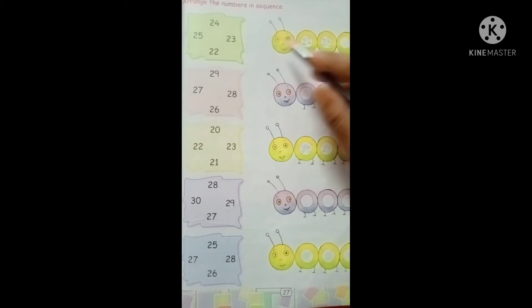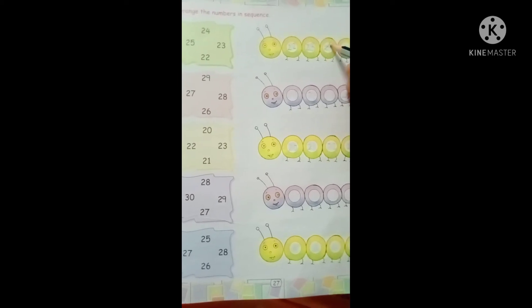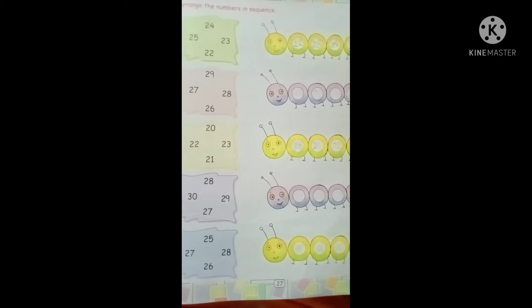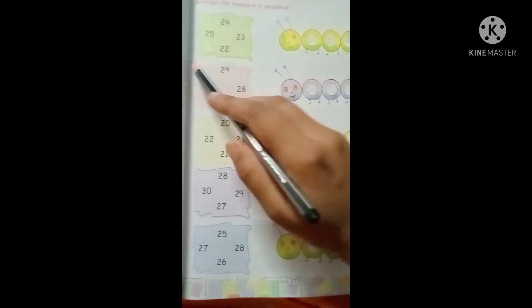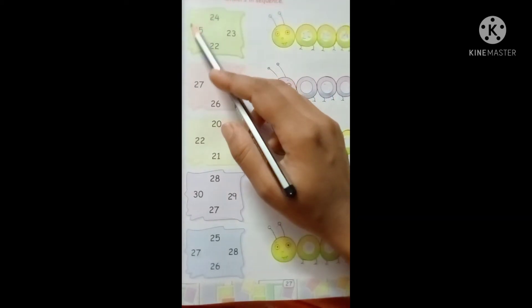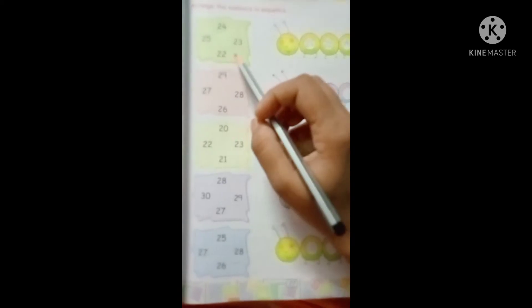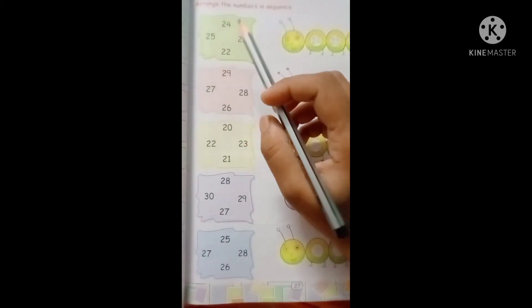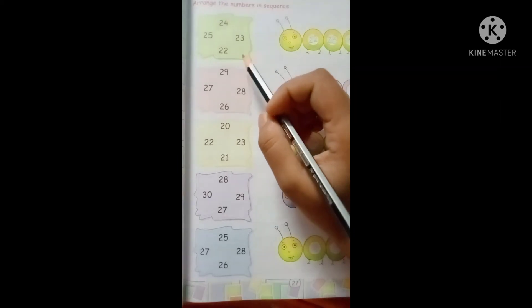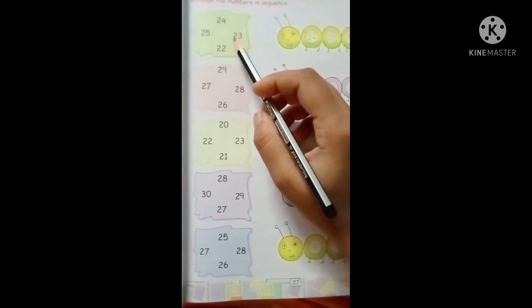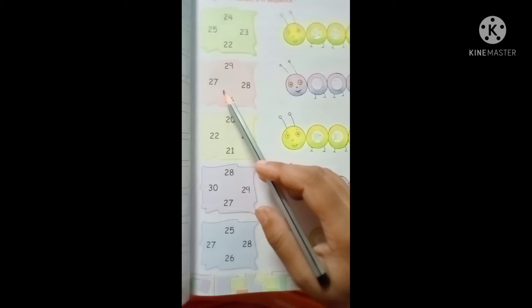After that 24 is come, last one is 25. So it's called sequence. Sequence means some of the numbers are mixing so you find out which one is first come. Like this way you write.